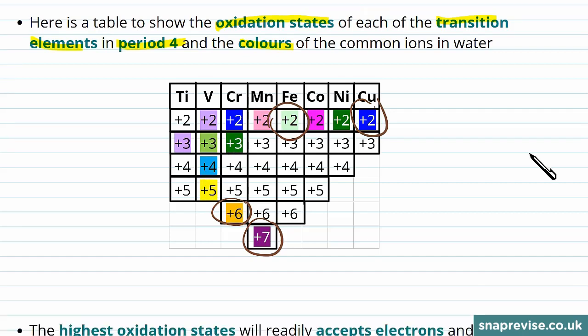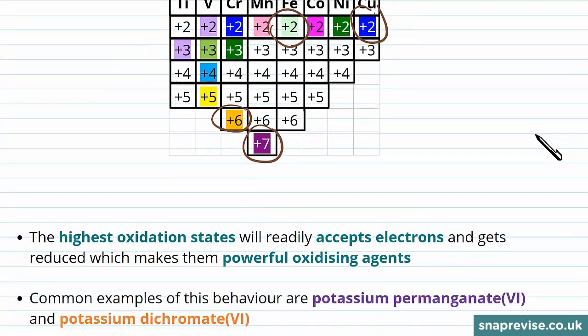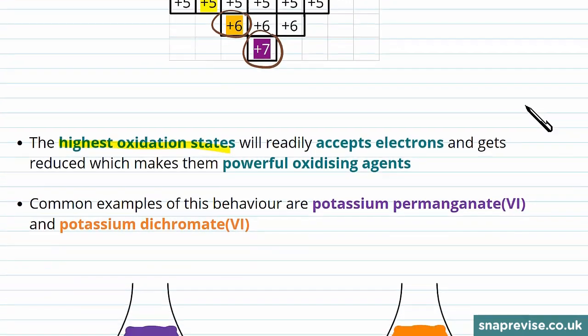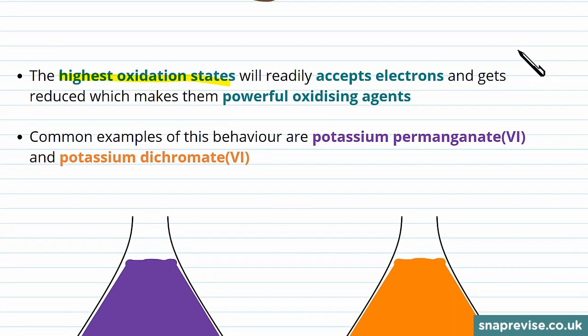The highest oxidation states of the transition metals will readily accept electrons to lower their oxidation states, and this means they are reduced. Because they are easily reduced, this makes them powerful oxidizing agents because they will take those electrons from elsewhere.